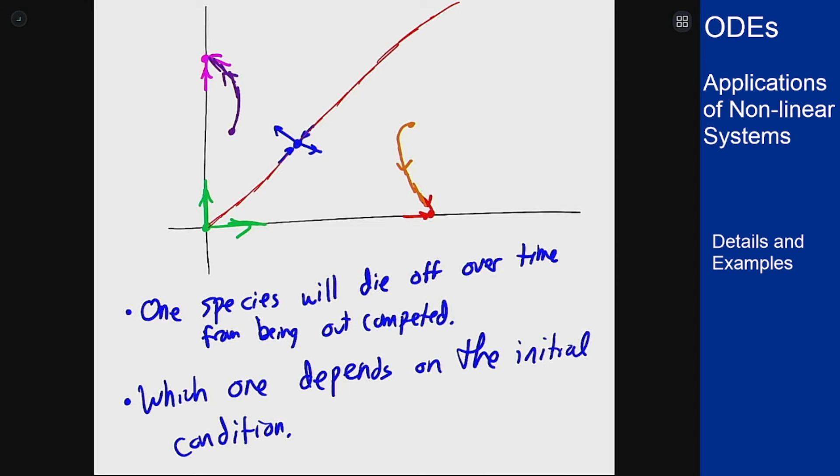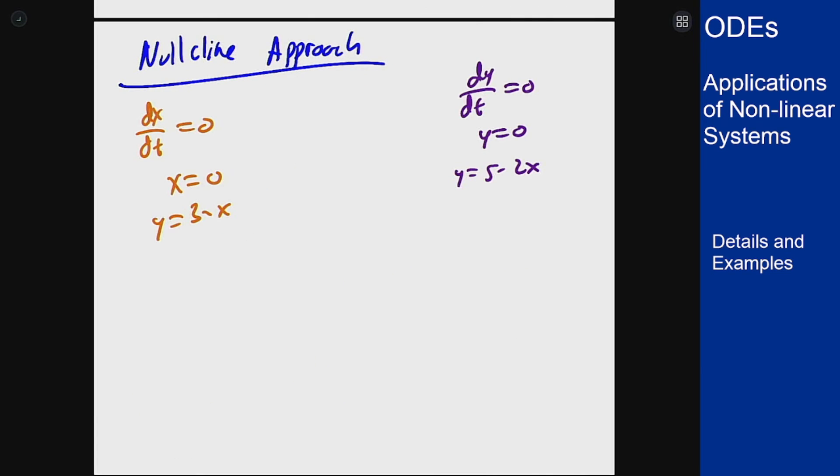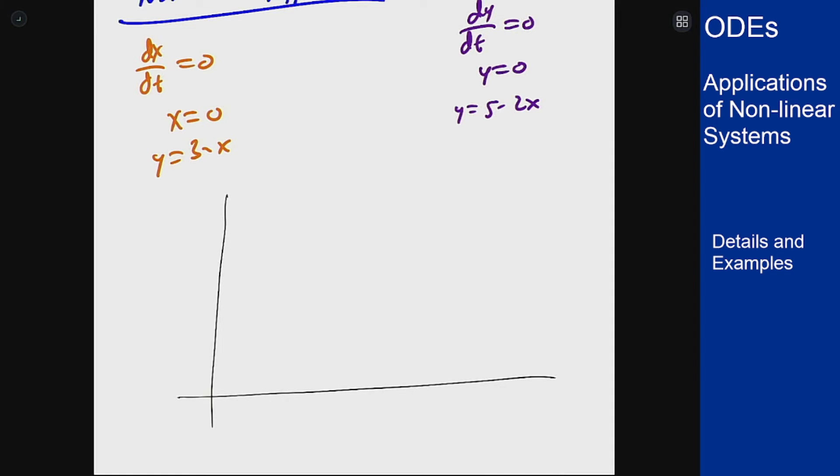Now as a final approach look at some null clines for the same problem to see how that factors into the situation. So we'll bring down the equations from before. Now we can draw these null clines. So x equals 0 is the y-axis and y equals 3 minus x hits at 3 and 3 like this. y equals 0 is the x-axis and 5 minus 2x hits at 5 up here and 5 halves down here.